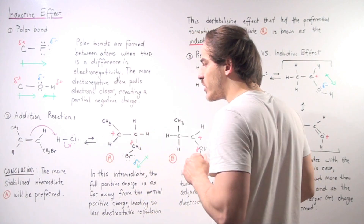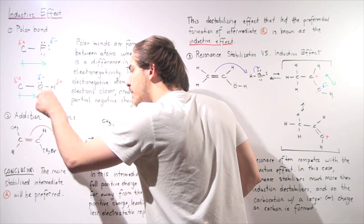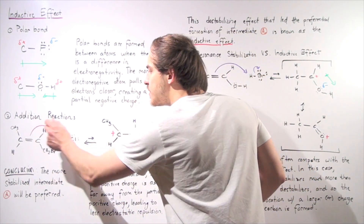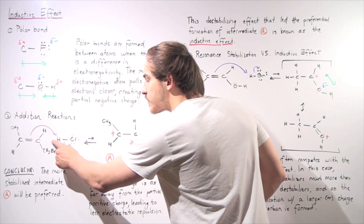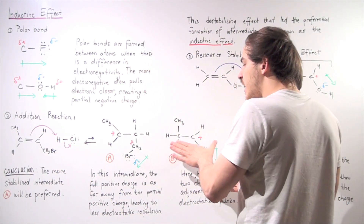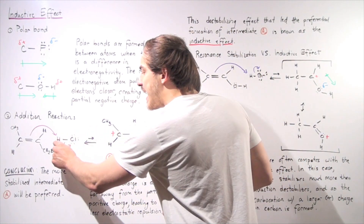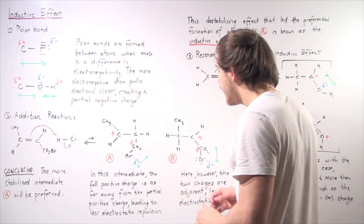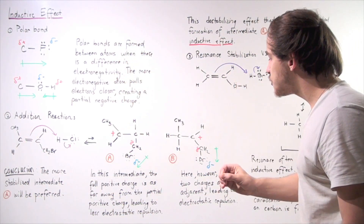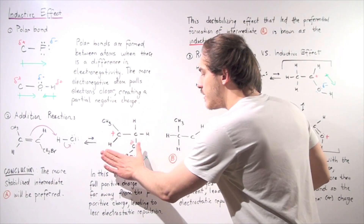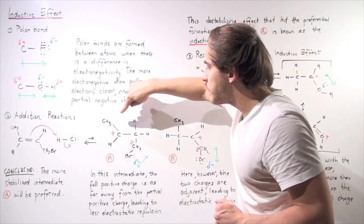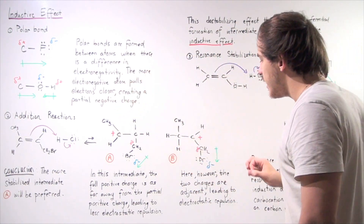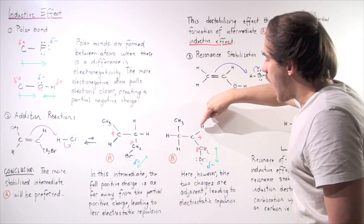In the first pathway, the pair of electrons in the pi bond grabs the H atom, displacing the electron pair, and the H atom is placed onto one carbon, forming intermediate A with a full positive charge on that carbon. In the second pathway, the H atom attaches to the other carbon instead, forming intermediate B with a full positive charge on the second carbon.